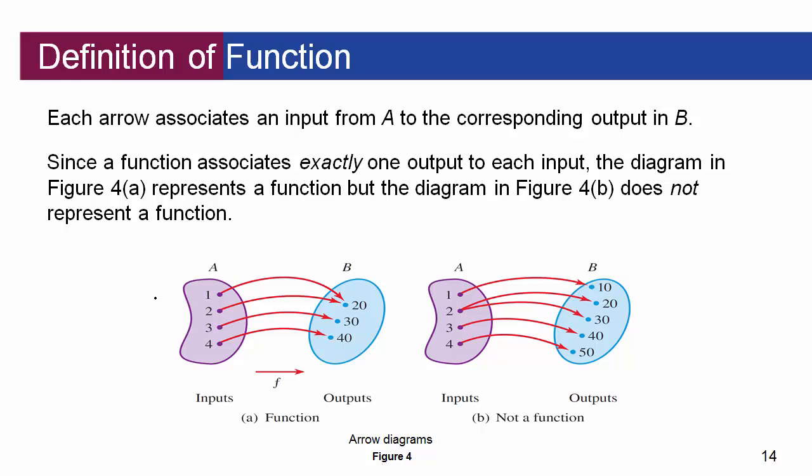You just can't have one input going to two outputs. For instance, it's okay that 1 and 2 both go to 20, but we cannot have 2 going to both 20 and 30 — that's no longer a function. A function cannot change its mind. The output has to be the same for one input. You can't say 2 goes to 20 and then later say 2 now goes to 30. That's not a function — it's a relation, a relationship, but not a function.